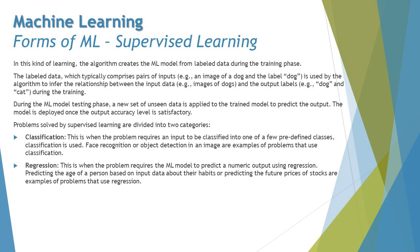During the ML model testing phase, a new set of unseen data is applied to the trained model to predict the output. Once training is complete, fresh unseen pictures are fed in as input to see if the model predicts the right output. The model is deployed once the output accuracy level is satisfactory — something like 99% precision — before going to production.